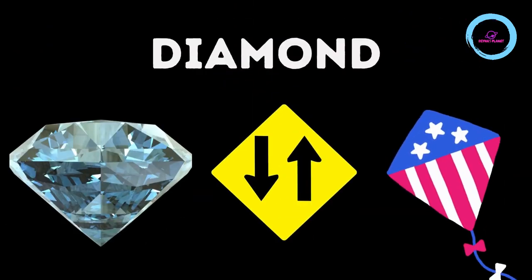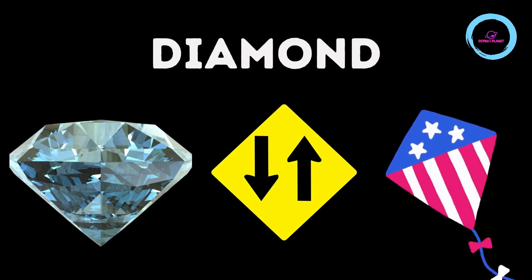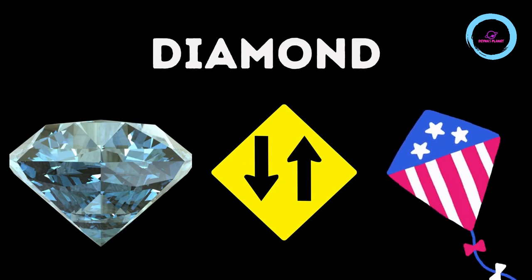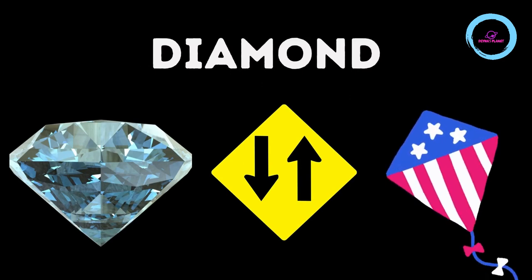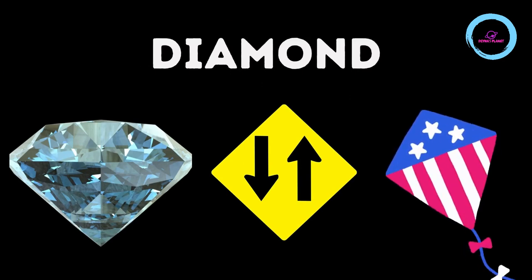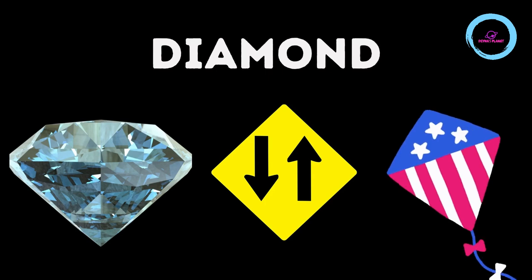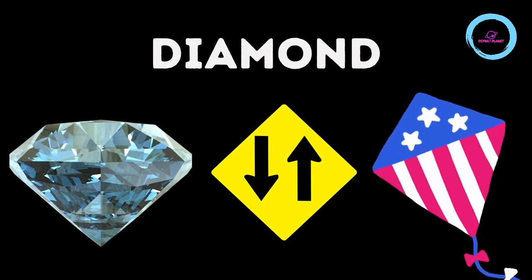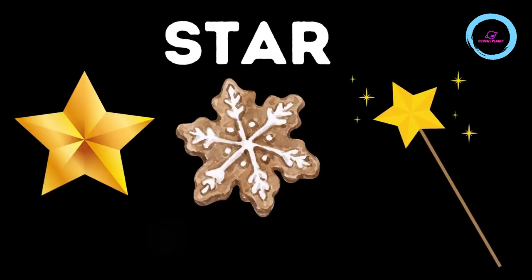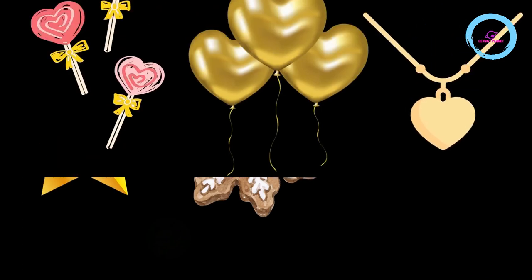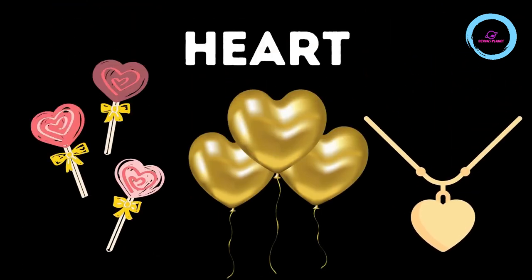So let's go through some other common shapes. These are all diamond shaped objects. These are all star shaped objects. And finally, these are all heart shaped objects.